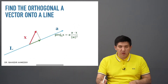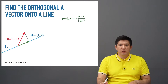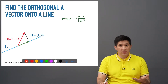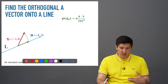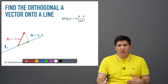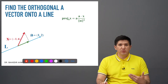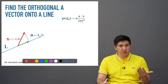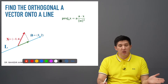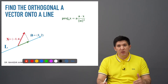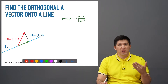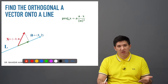So let's do a problem. Let's say you are given a vector x with components minus 1 and 6, and vector a with components 1 and 2. I would like to find the orthogonal projection of vector x onto this line, which is passing through vector a.